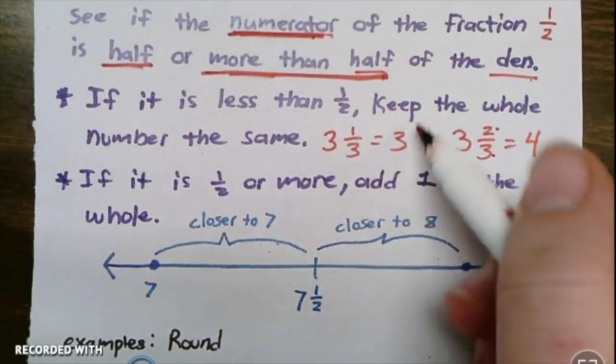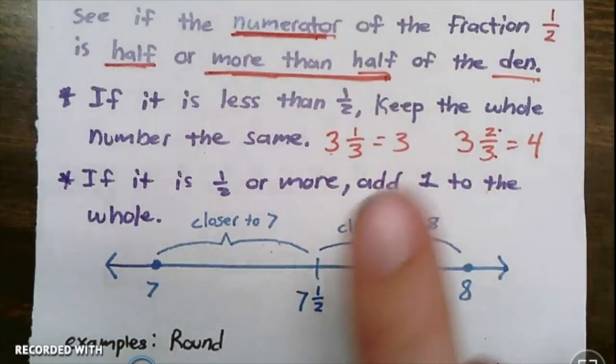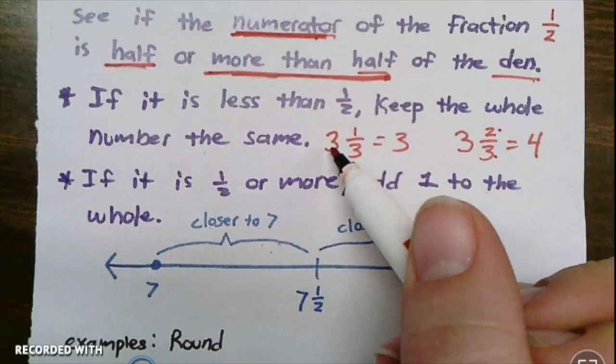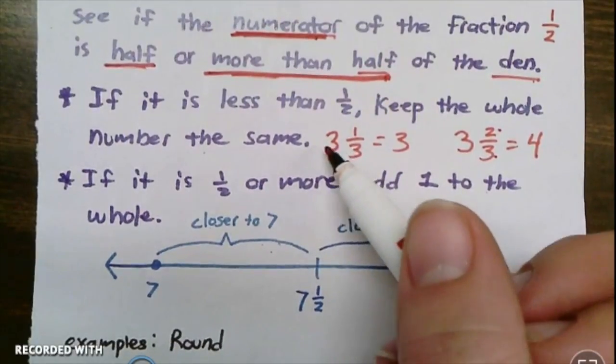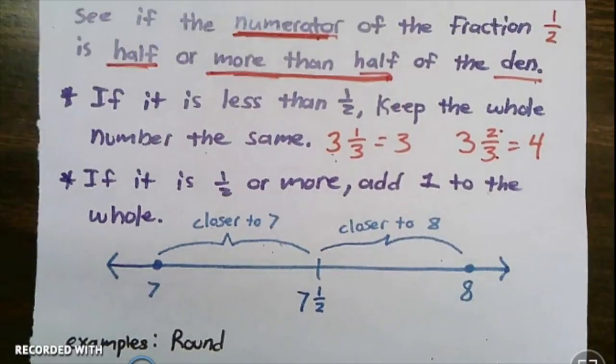When rounding, your whole number is either going to stay the same or it's going to go up just one whole number. It's never going to go down to a two or up to a five. You will just round it either up once or it'll stay at the same whole number.